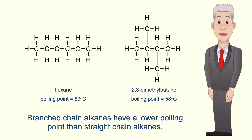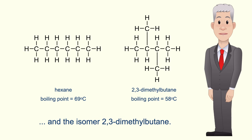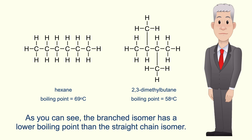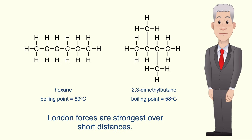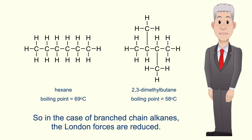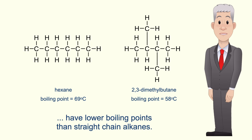Branched chain alkanes have a lower boiling point than straight chain alkanes. For example, the boiling point of hexane and its isomer 2,3-dimethylbutane shows that the branched isomer has a lower boiling point than the straight chain isomer. That's because branches prevent alkane molecules from getting close together, and London forces are strongest over short distances. So in branched chain alkanes the London forces are reduced, which explains their lower boiling points.